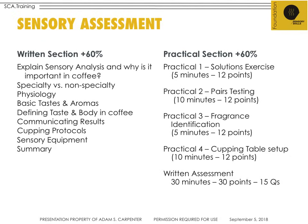For the practical section, you should also achieve at least 60% to pass. In the first practical, there will be a solutions exercise — you should be able to identify six different solutions. They'll be clear, looking like water, and tasting blindly: salt, sweet, sour, bitter, umami, and plain water. Can you distinguish? Practical two is a pairs test, where you should be able to distinguish higher perceived quantities of bitterness or acidity in a pair of brewed coffees.